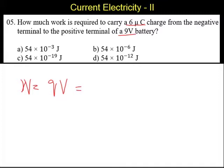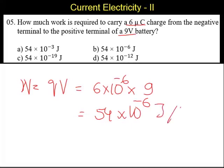Simply substituting for Q is 6 into 10 power minus 6 into 9, we will have 54 into 10 power minus 6 joules.